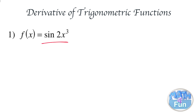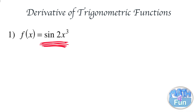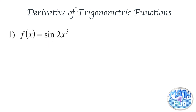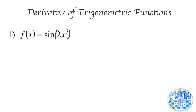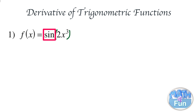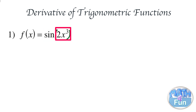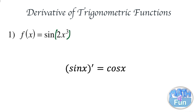Here we have the function f of x equal to sine of 2x cubed. To apply the chain rule, 2x cubed is inside the sine. So we derive first the sine function, and then we apply the derivative of the inside of the sine function for the next step. The derivative of sine is cosine.